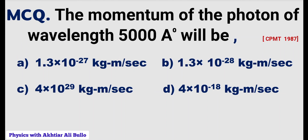The momentum of the photon of wavelength 5000 angstrom will be: (A) 1.3×10⁻²⁷ kg·m/s, (B) 1.3×10⁻²⁸ kg·m/s, (C) 4×10²⁹ kg·m/s, (D) 4×10⁻¹⁸ kg·m/s.